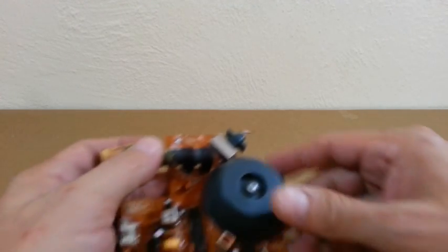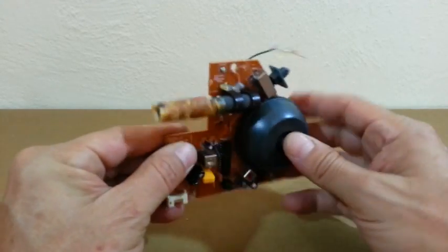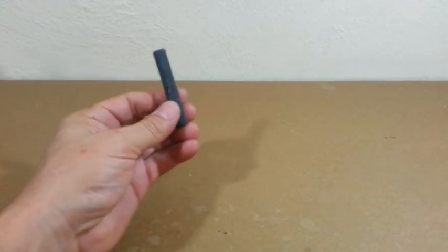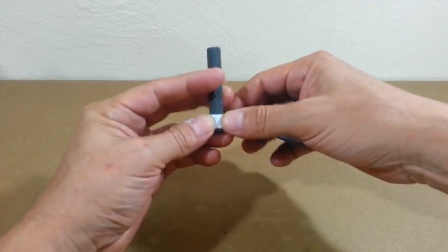In order to make the transformer we need a ferrite core. You can get one from an old AM radio. Here you have the ferrite core, it is part of the antenna. Before winding you need to put some tape on the ferrite core.